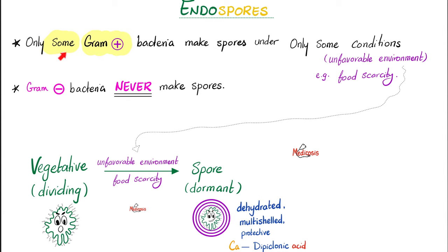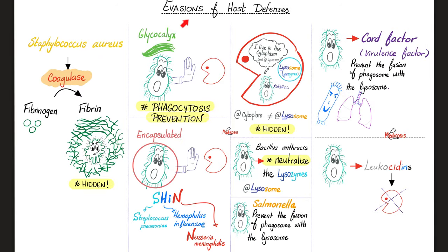Endospores are only made by some gram-positive bacteria. Gram-negatives never make spores. We've learned about different mechanisms by which bacteria evade your immune system. The capsule was a big deal, especially when it comes to the Streptococcus pneumoniae capsule. It's the job of your spleen to get rid of these encapsulated organisms. So if I have a spleen problem, I am vulnerable to infections with encapsulated bacteria.